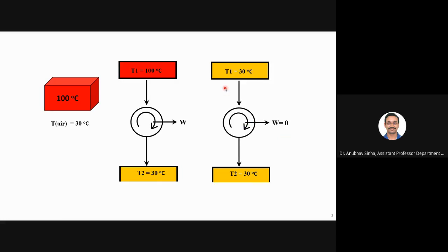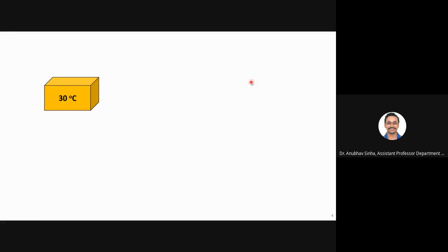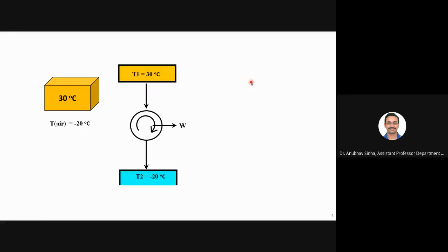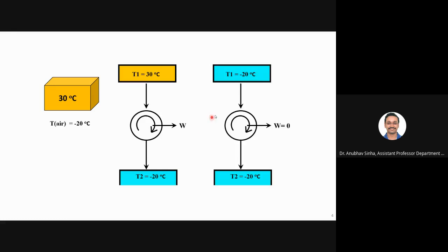Does that mean there is no energy left in the block at 30°C? No — it still has a temperature above zero Kelvin. If I want to extract more energy, say the block is at 30°C and my ambient temperature is much lower — like in Kashmir at minus 20°C — I can again put a heat engine between the two temperatures and extract some work. But after some time it will again come to minus 20°C and work will stop.